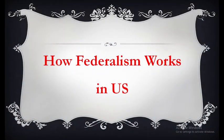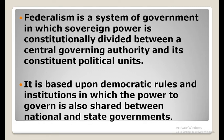Now let's come to the main point: how federalism works in the United States of America. Federalism is a system of government in which sovereign power is constitutionally divided between a central governing authority and its constituent political units — power is distributed between the center and the states. This division of power is based upon democratic rules and institutions in which the power to govern is also shared between national and state government. Federalism is not only about division of powers between the center and states, but also about sharing those powers at a certain level.